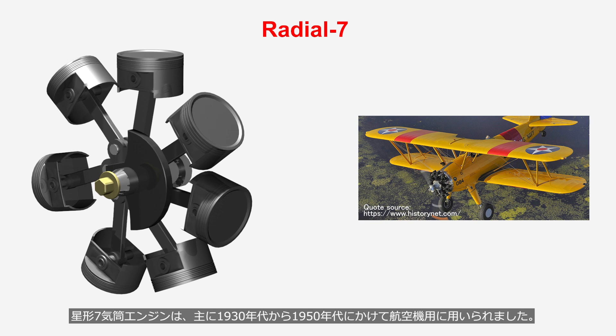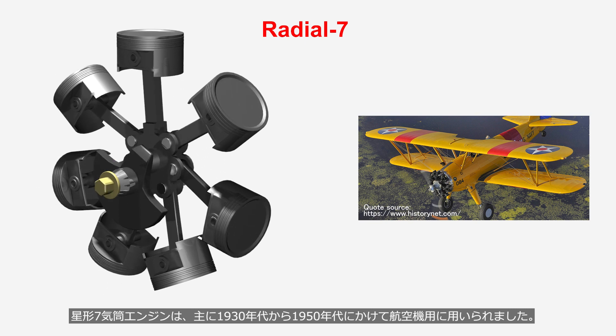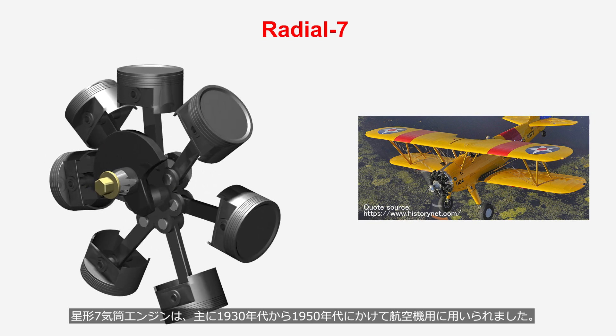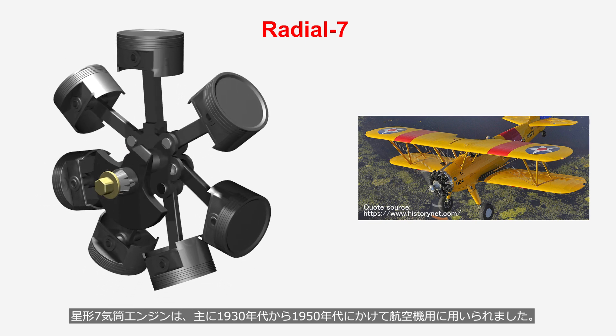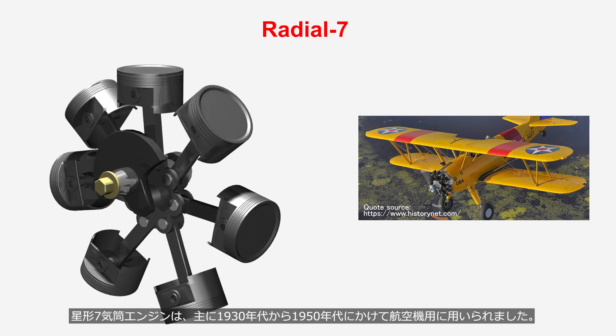Radial seven-cylinder engines were mainly used for aircraft, primarily from the 1930s to the 1950s.